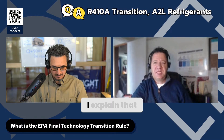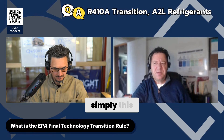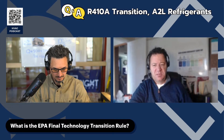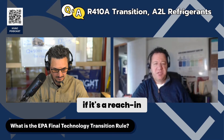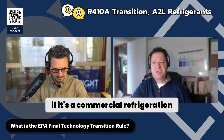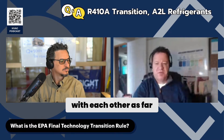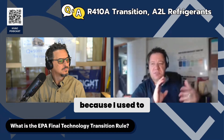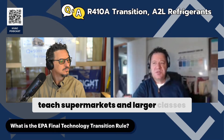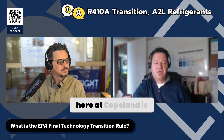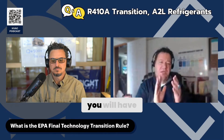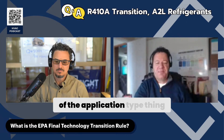The way I explain it in the classroom is simply this: it's about the applications. Whether it's a split system, a reach-in, or commercial refrigeration, it will be based on how many pounds of refrigerant are in the system and what the GWP is — they interact with each other. The longer the line set, the more opportunity for leaks, and the smaller the window you'll have for refrigerants as far as GWP.